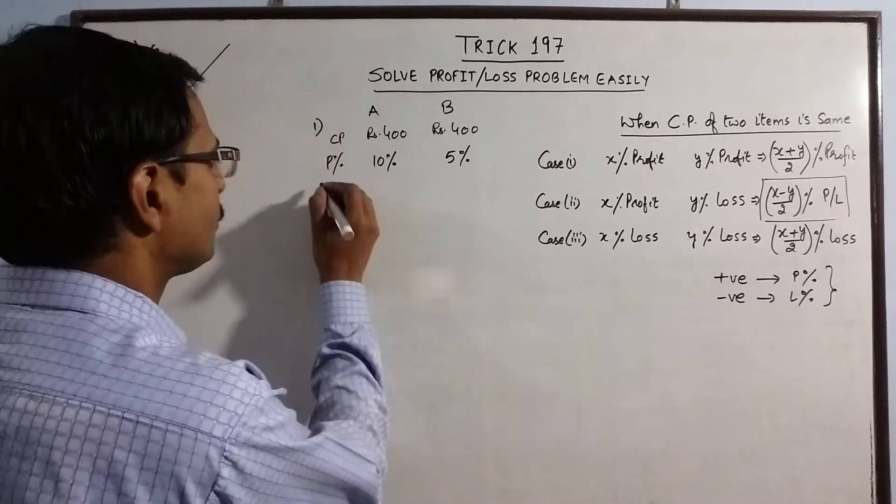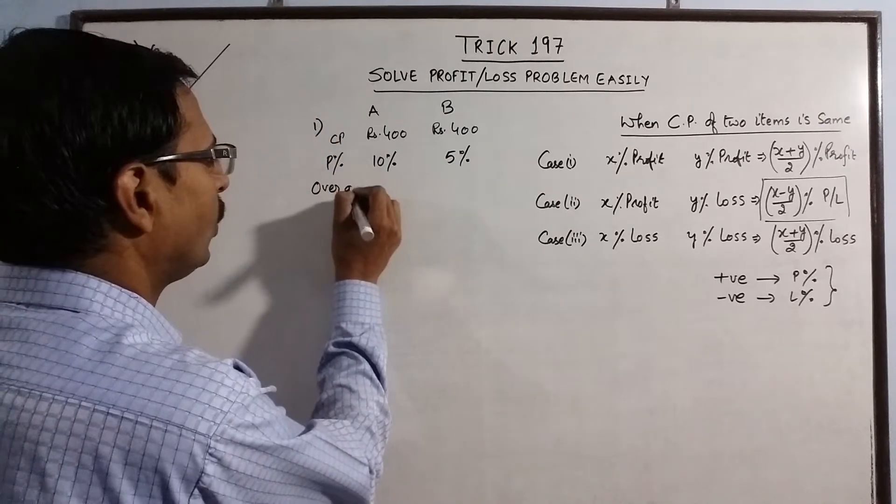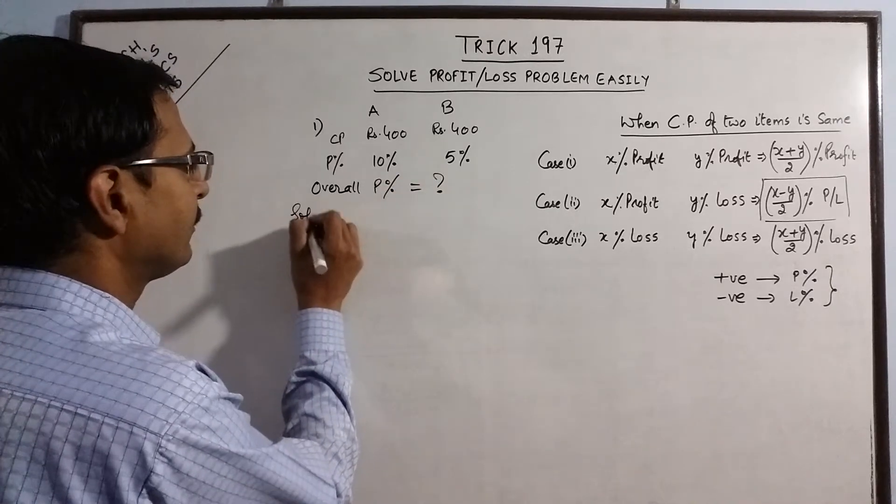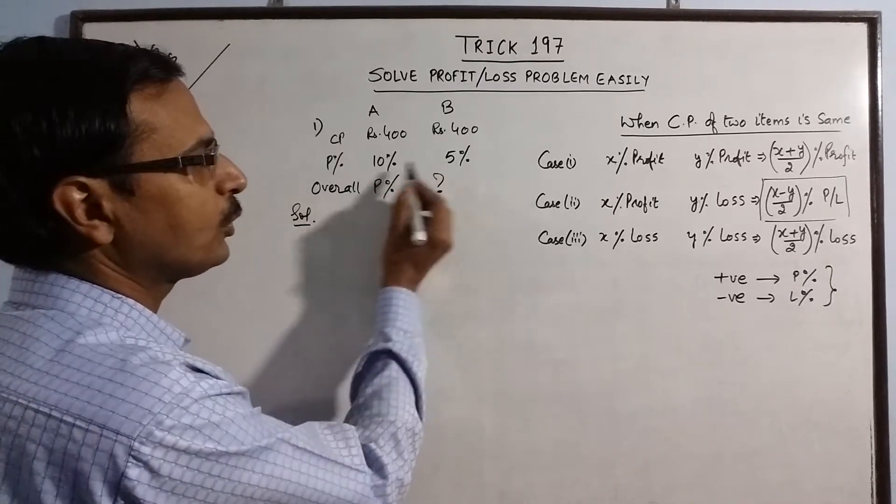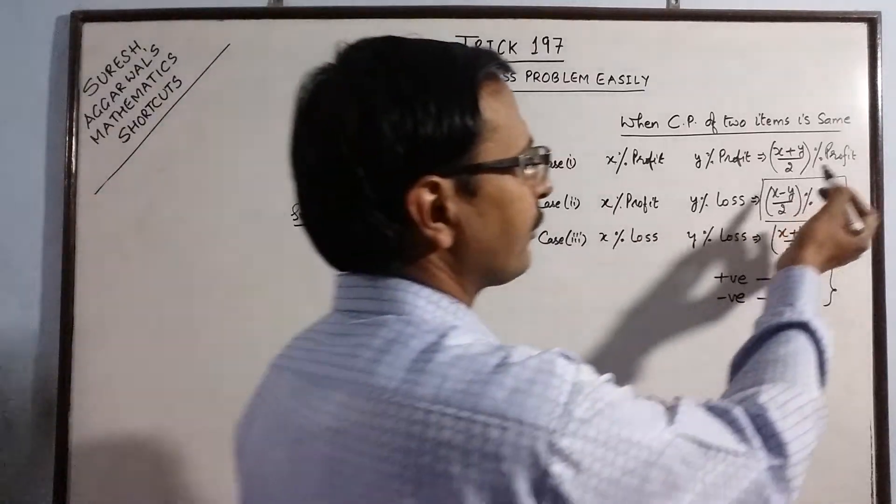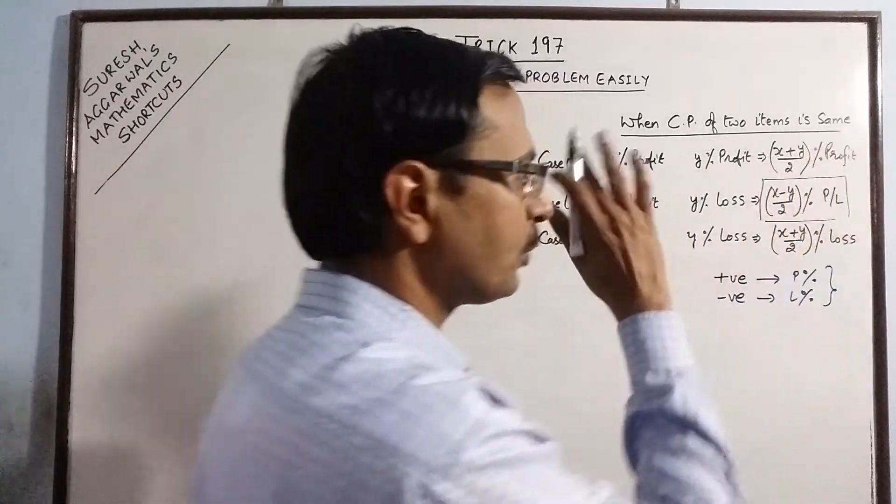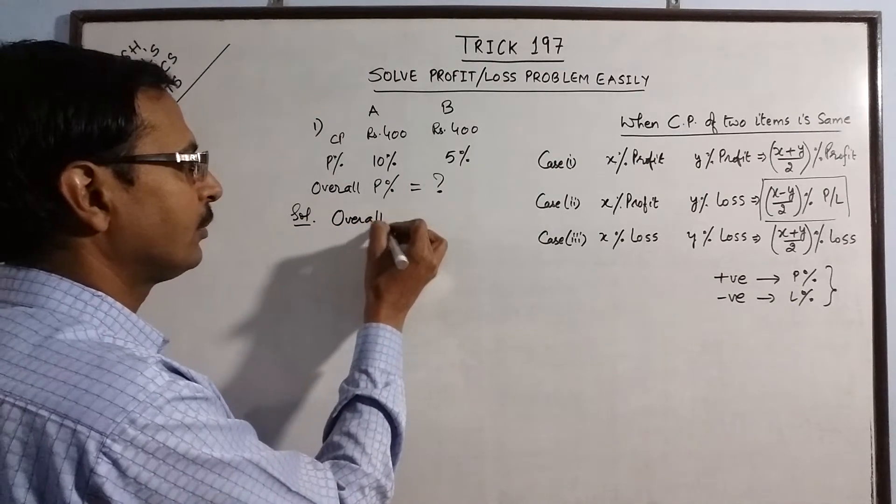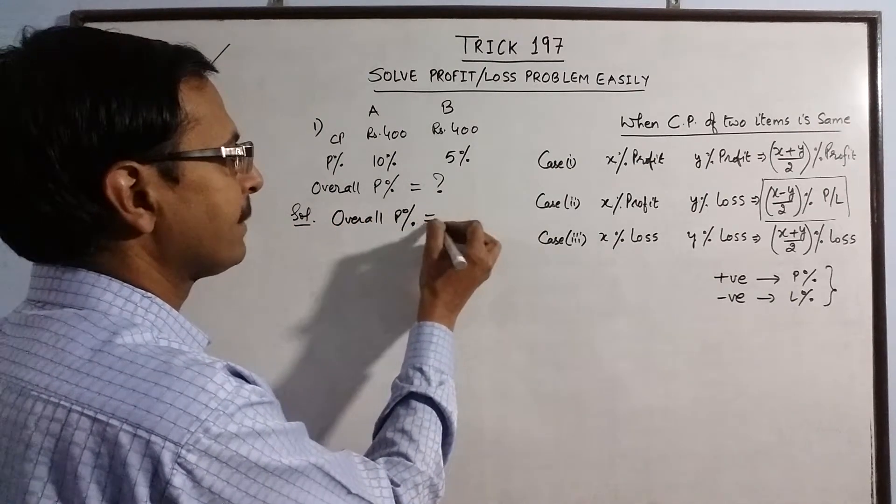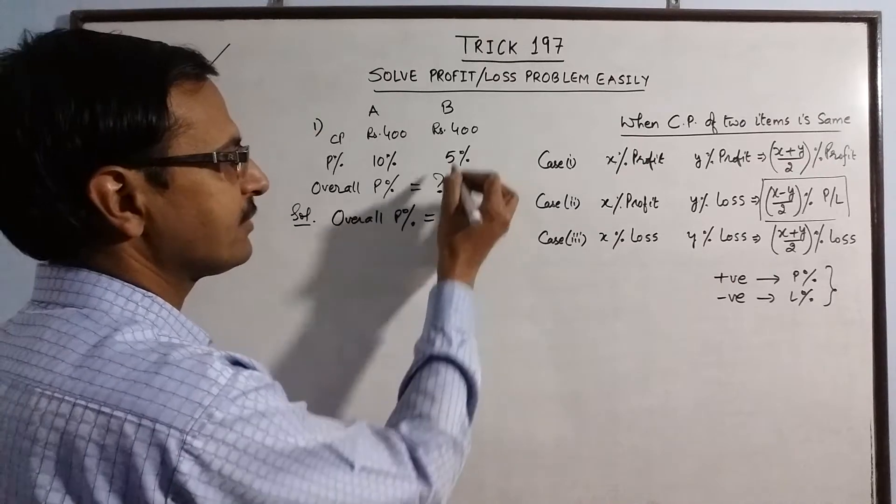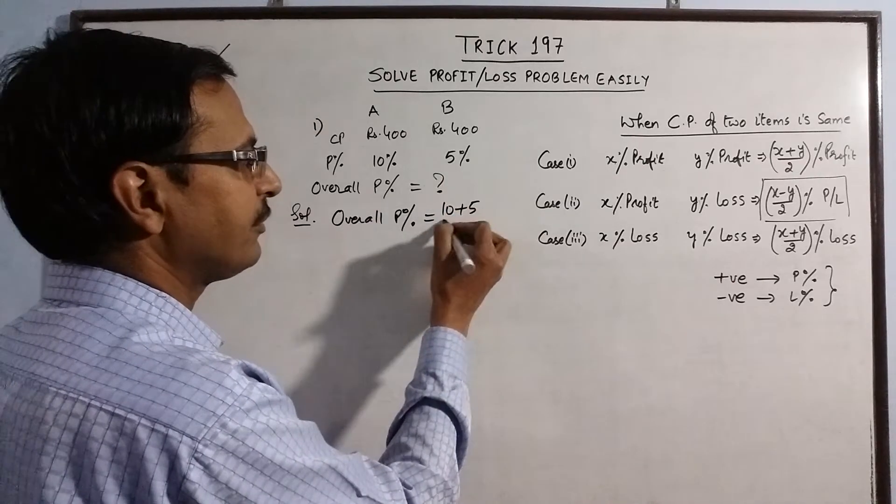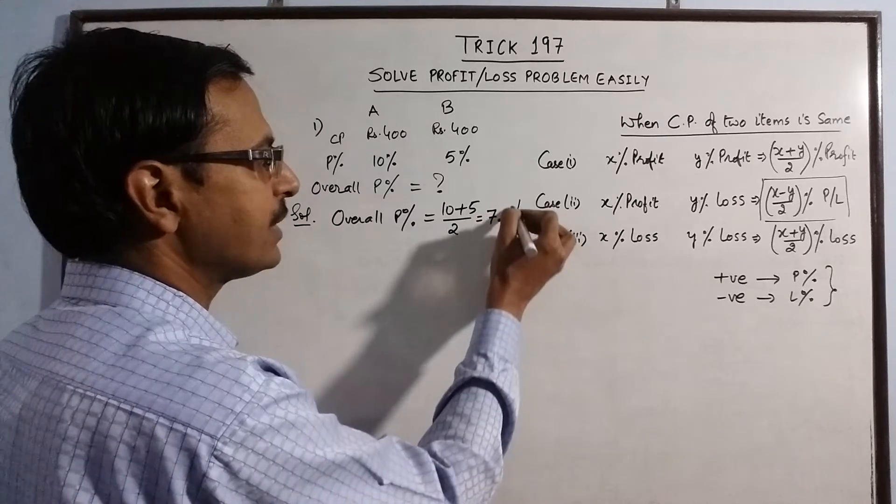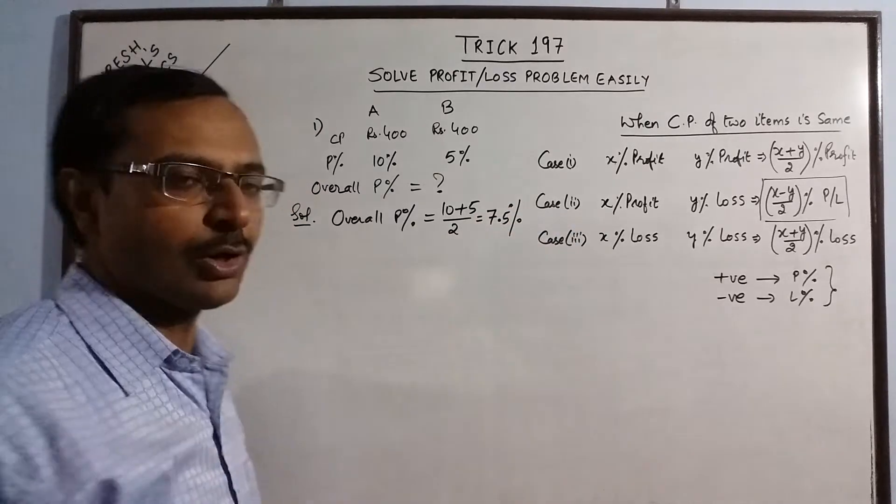So we need to find out the overall profit percent. So very simple, since we have profit on both items, overall profit percent is given by the mean of the two profit percents. So overall profit percent will be, say this is 10%, this is 5%, so 15 by 2, that is 7.5% is the overall profit.